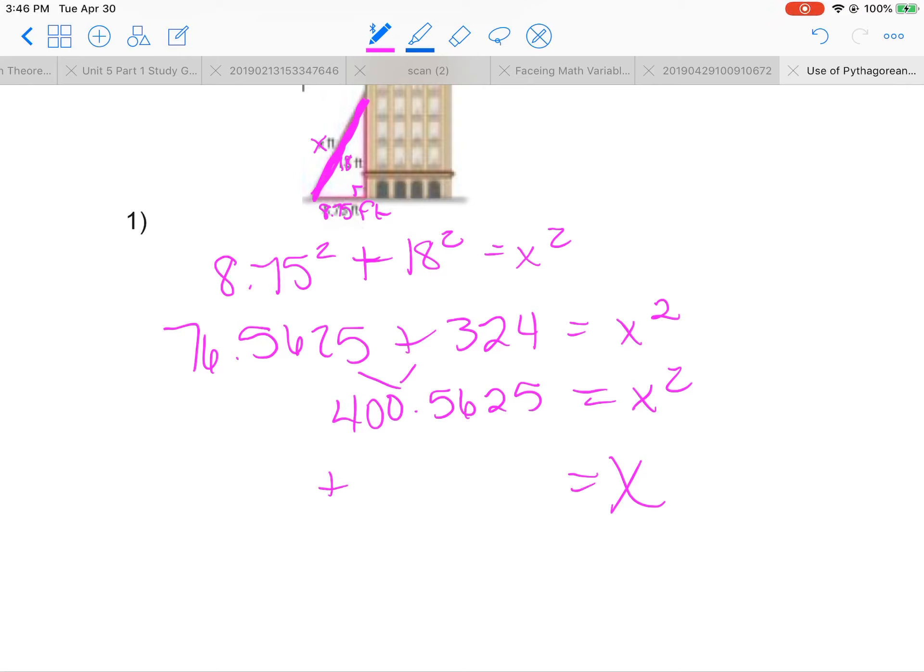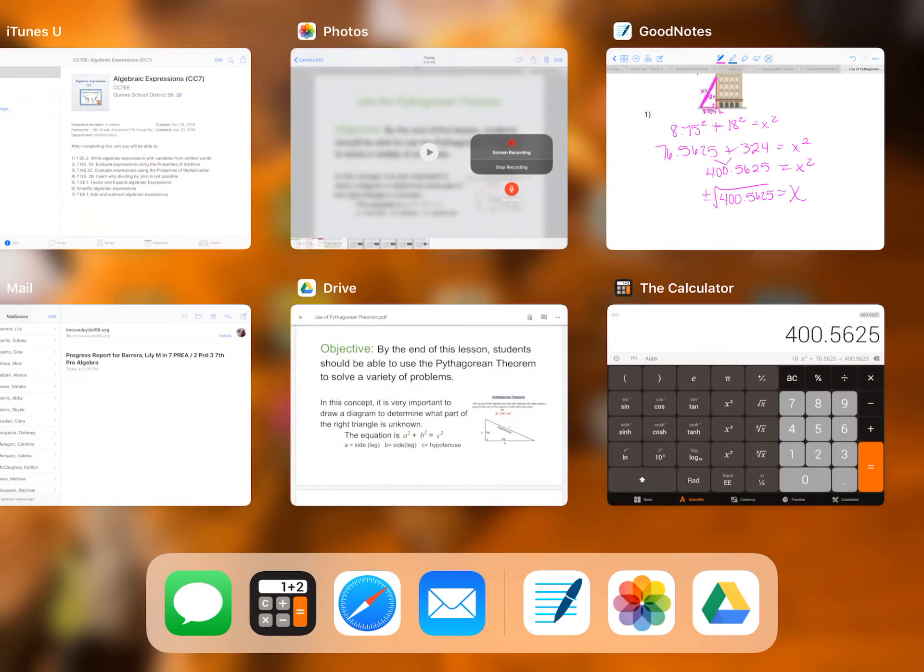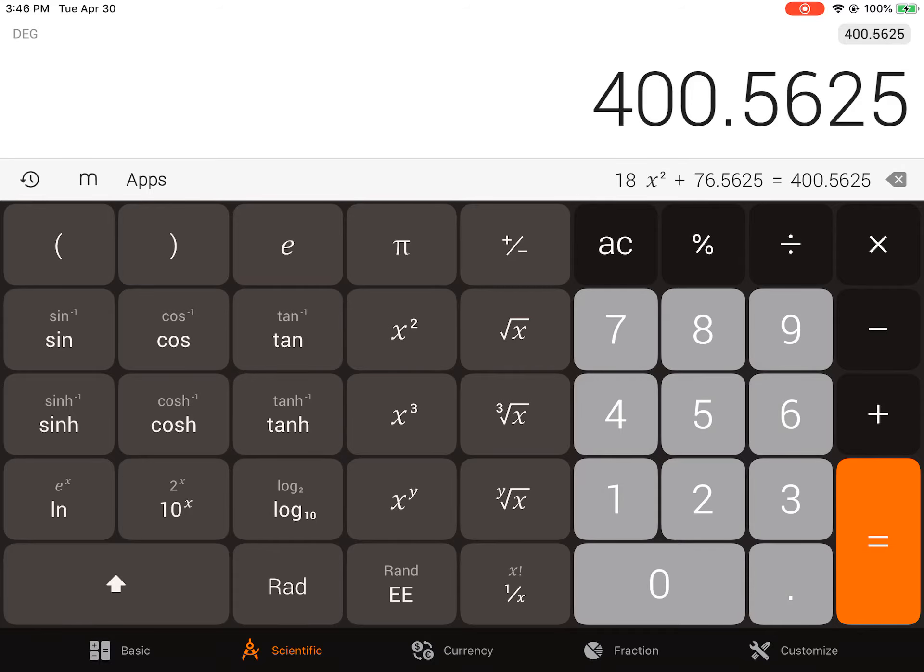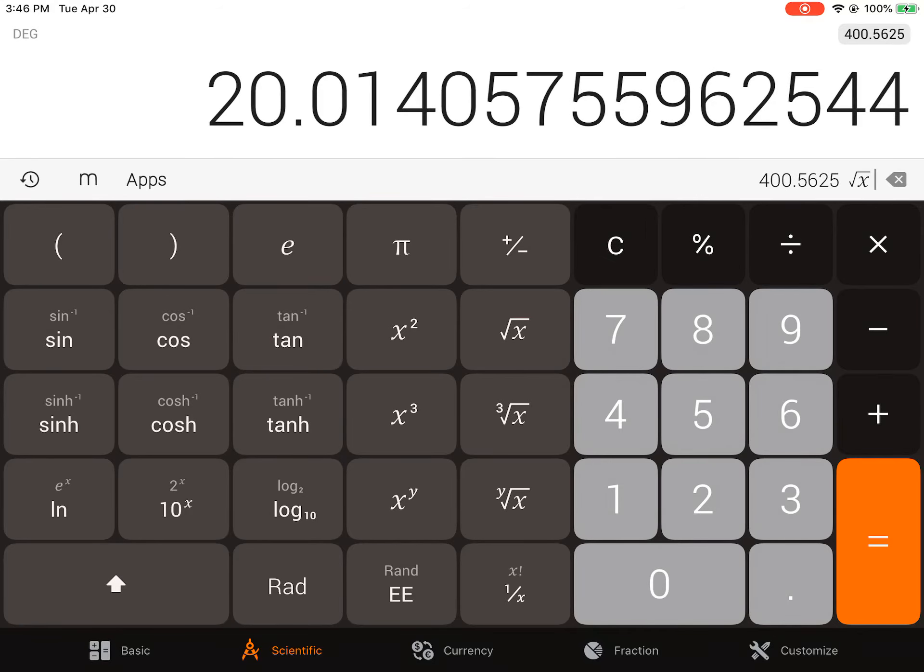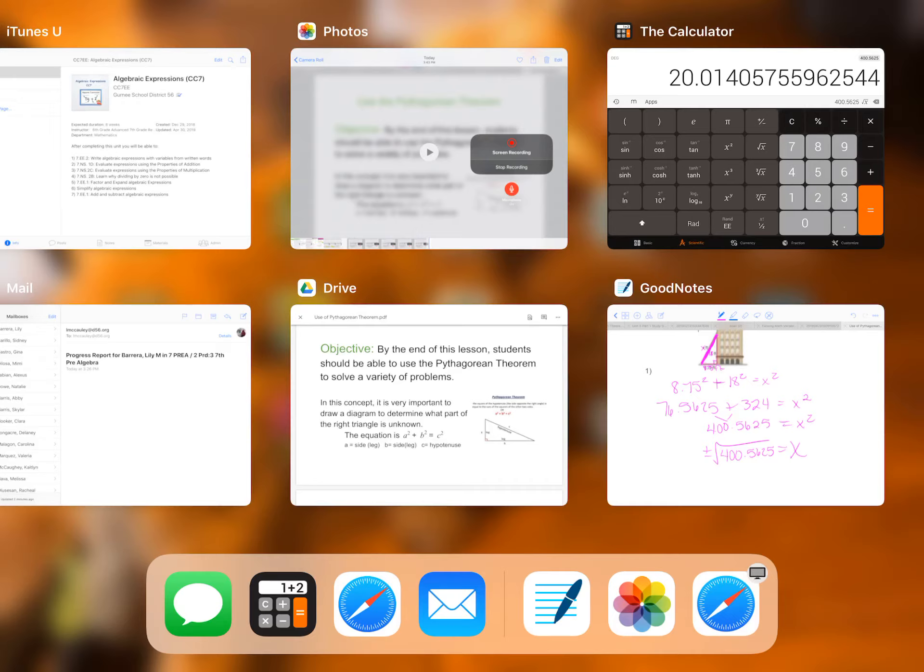So x equals plus or minus the square root of 400.5625. So take the square root of that. And that is equal to 20.01 if we're rounding.